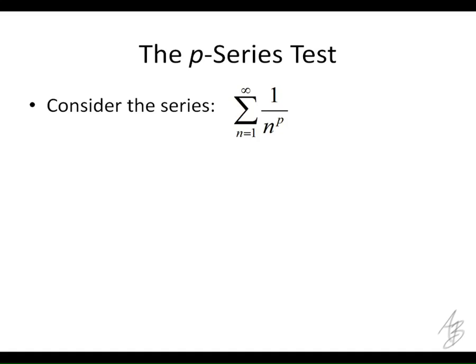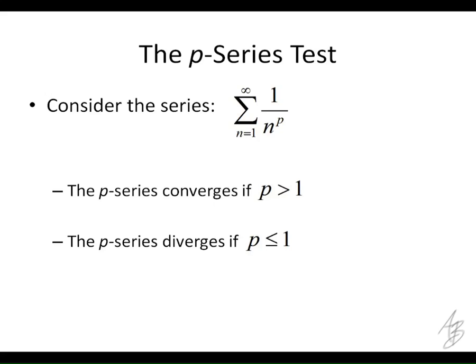So what the P-series test says is, for this series, it's going to converge if P is greater than 1, and it's going to diverge if P is less than or equal to 1.